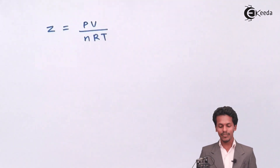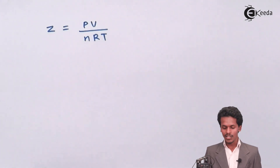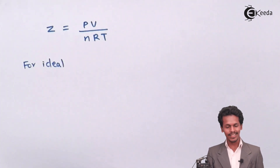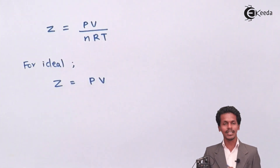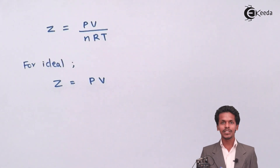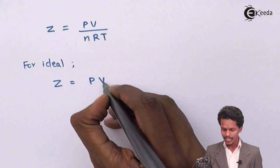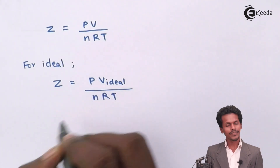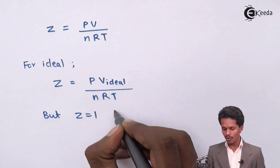So, Z is equal to the compressibility factor, which equals PV divided by nRT. For ideal gases, we can write this as Z equals PV ideal divided by nRT, and the volume is kept the same because in ideal gases there is no change in volume while compressing. Z is equal to 1 for an ideal gas.